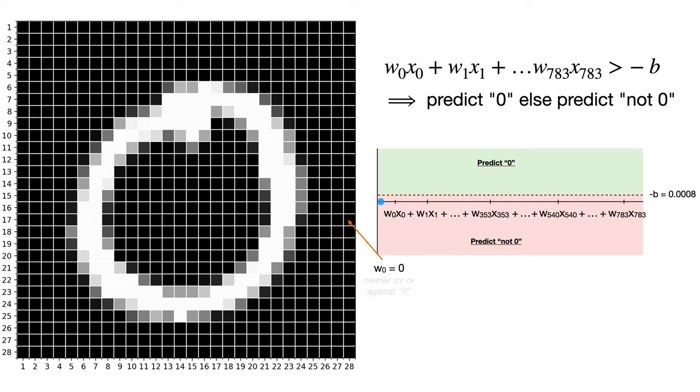Now let's hone in on this top-left pixel, pixel zero. The weight associated with this pixel is zero. So it actually doesn't matter whether this pixel is white or black. It has zero effect on our model. It's sort of like our model is saying that this pixel is completely irrelevant in classifying zeros versus not zeros. That turns out to be the case for a lot of these terms.